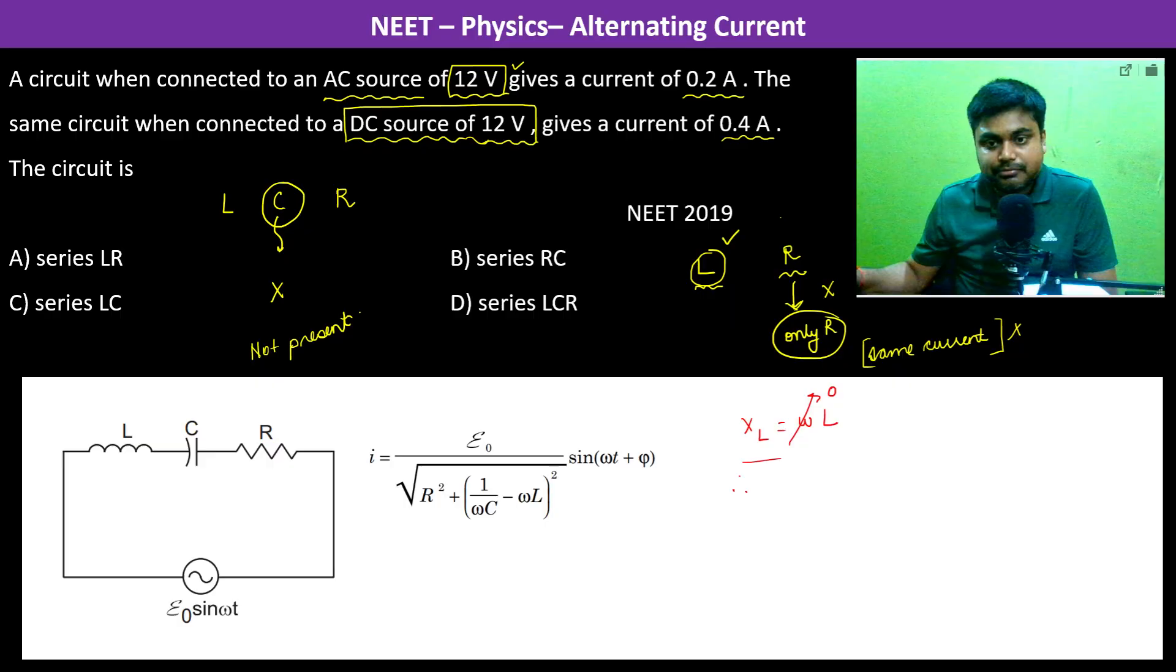Therefore, it will start to act as if it is a connecting wire with no resistance, when it is connected in DC circuit.